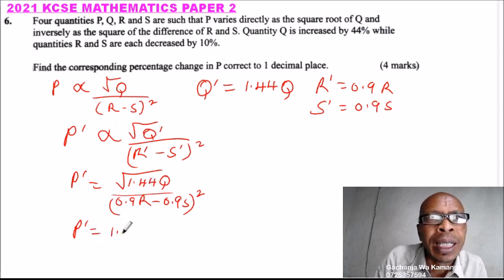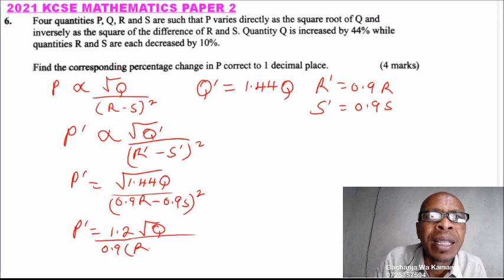We can see our new P equals the square root of 1.44, which is actually 1.2, times the square root of Q divided by - we factor out 0.9 since it is common for both R and S - and this is squared, we have R minus S squared.